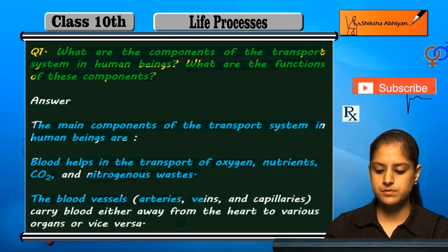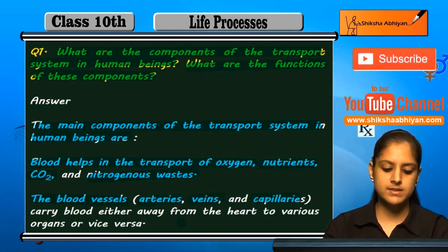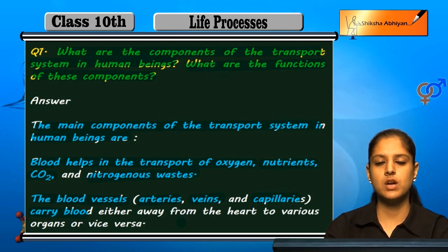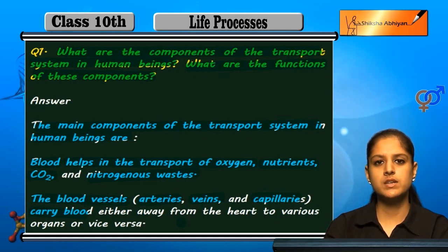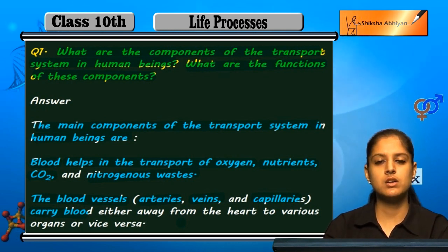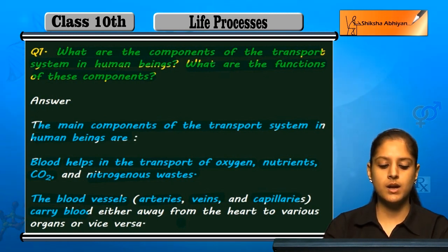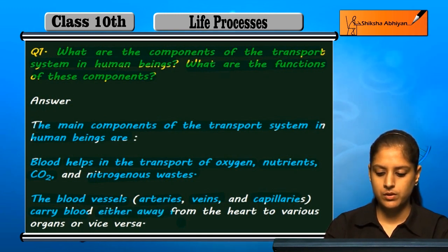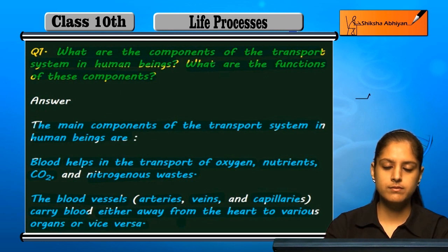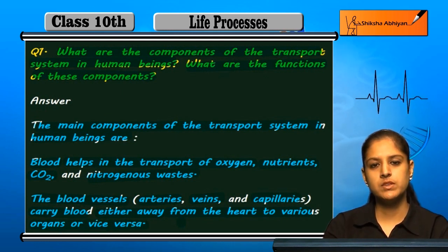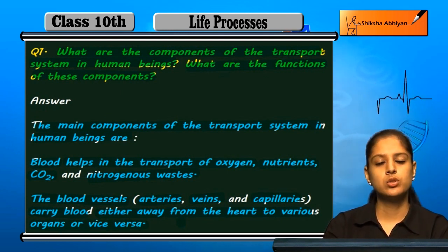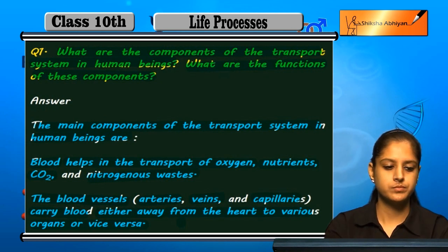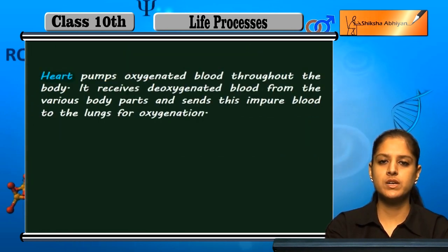The second component is blood vessels, which include arteries, veins, and capillaries. These blood vessels carry blood along with gases like oxygen, carbon dioxide, nutrients, and waste. They transport blood from the heart to various organs and back from the organs to the heart.